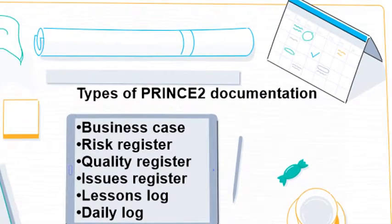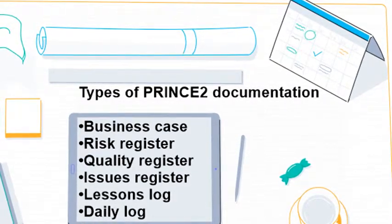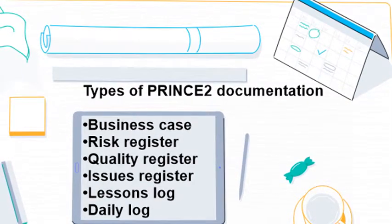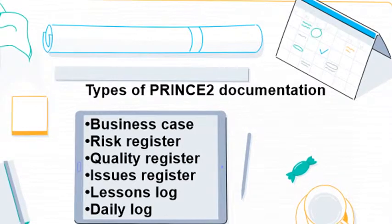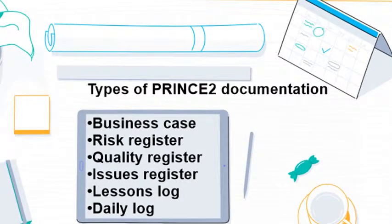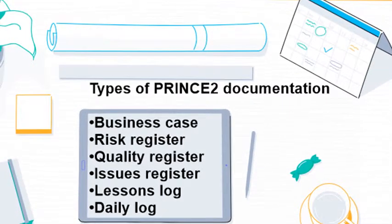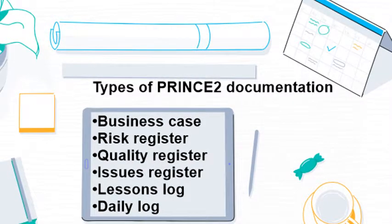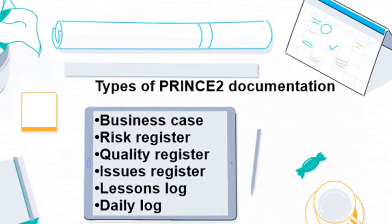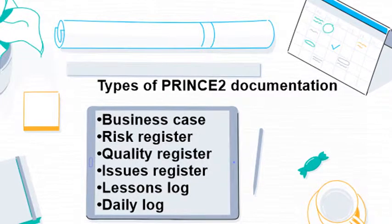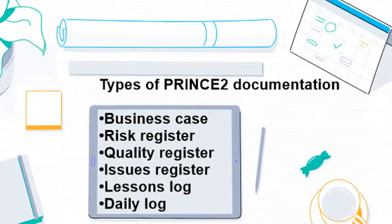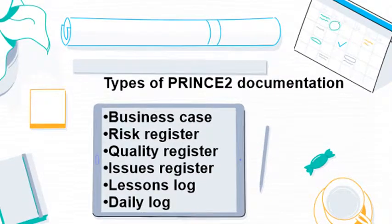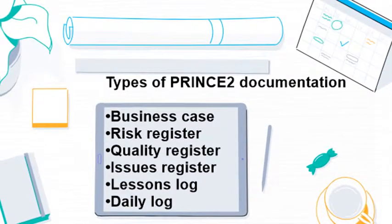The sixth phase is Managing Stage Boundaries. The project manager and project board review each stage to make sure the project is progressing according to plan and meeting project assurance requirements. At each review, the project board decides whether to continue with the next stage or to abandon the project completely. Project managers also hold a retrospective with the project team to record any lessons learned and improve the next stage.